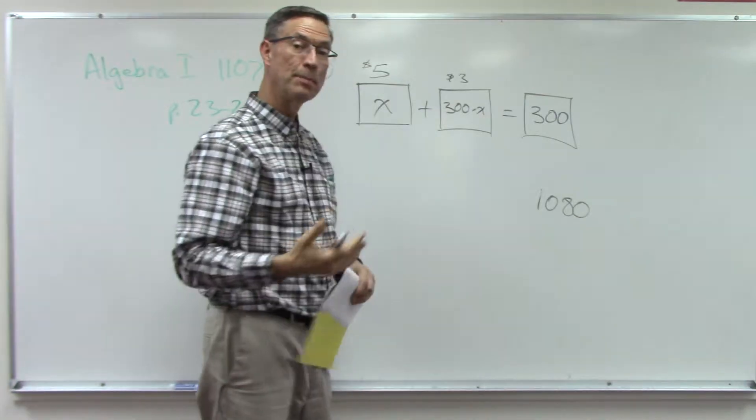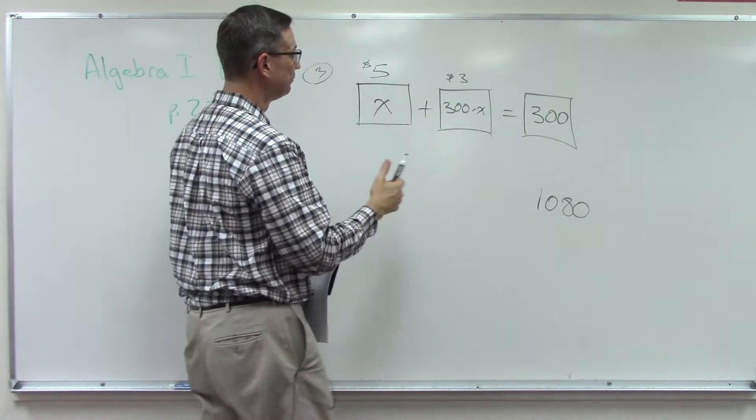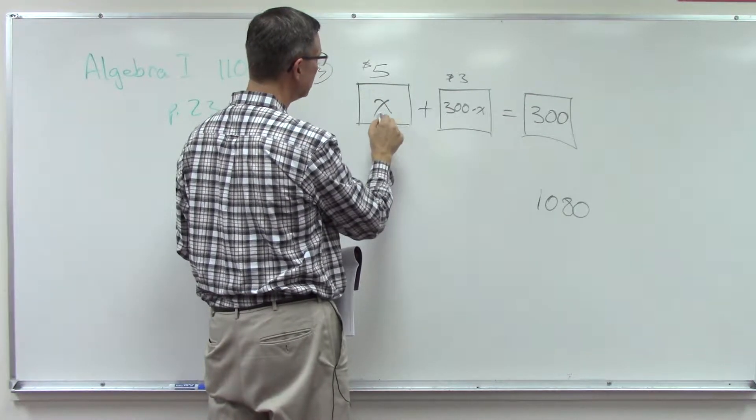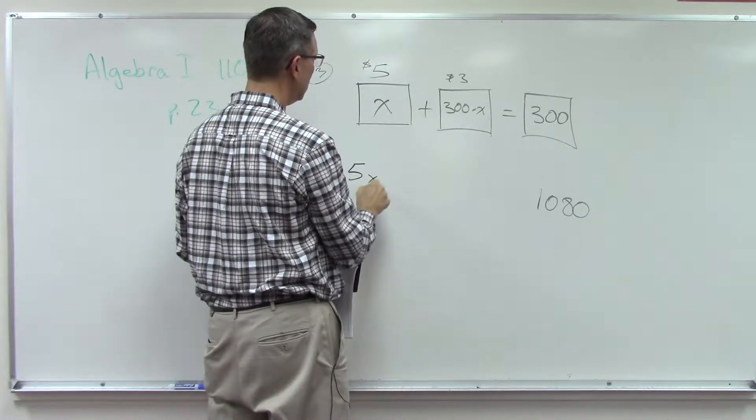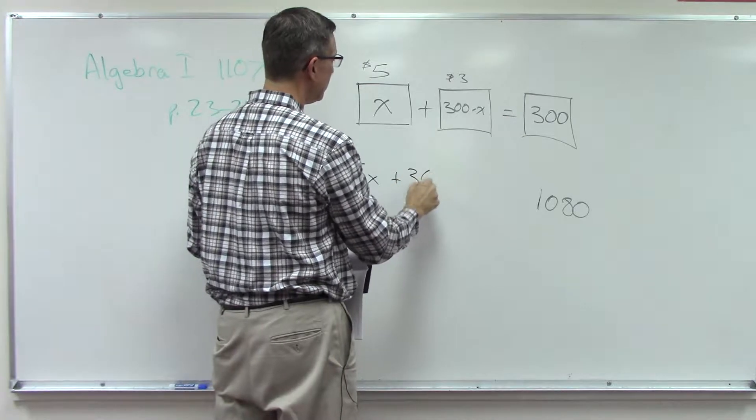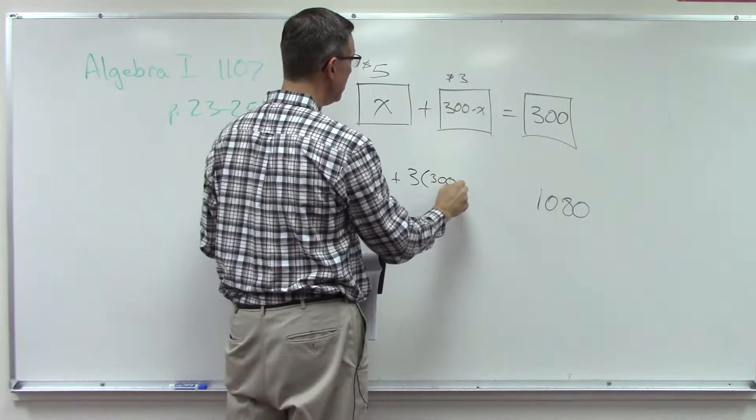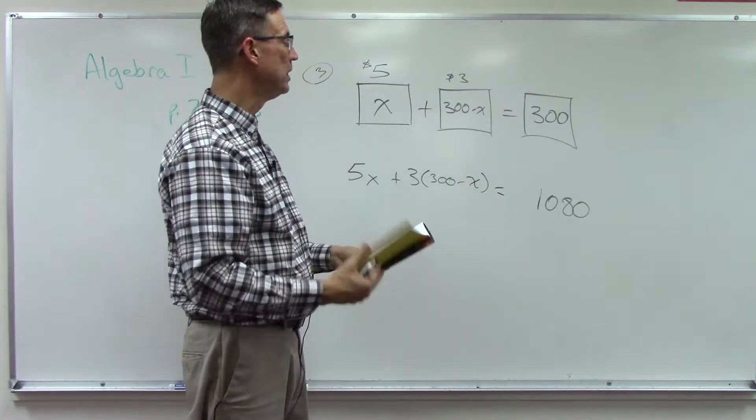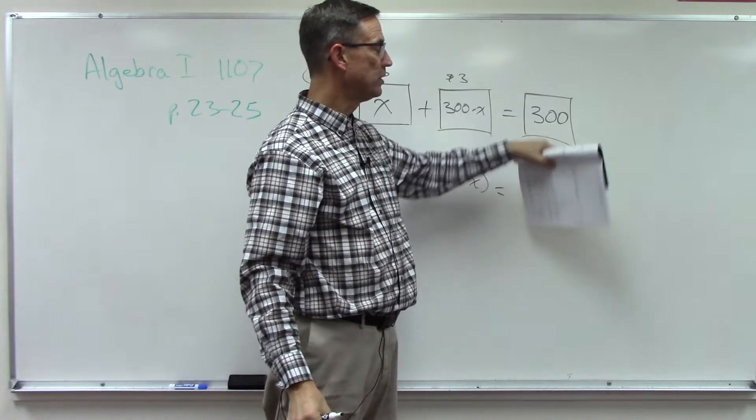So now we can set up an equation and we can say that 5x plus 3 times (300 minus x) has to equal, the total number of tickets is 300, but the total value is this 1080.